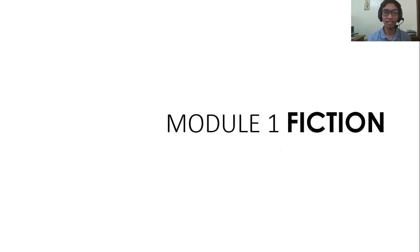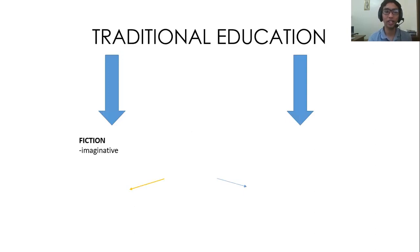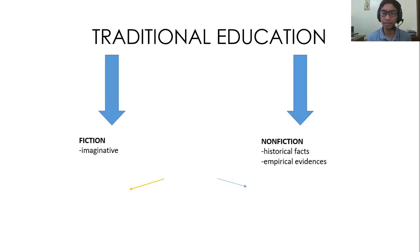Let's proceed to Module 1: Fiction. In traditional education, we have what we call fiction and nonfiction. Fiction calls for imaginative thinking — it is a product of our imagination. Nonfiction, on the other hand, is based on historical facts and empirical evidence. From the word 'non,' meaning 'not,' and 'fiction' meaning imaginative — nonfiction is not imagined by someone, but is based on real things or reality. I hope that clarifies the difference between fiction and nonfiction.